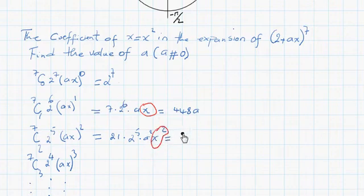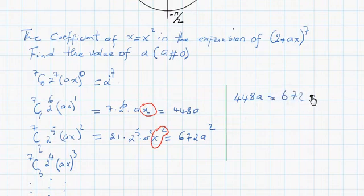The end result here would be 672a to the power of 2. Now, in the exercise, it is said that the coefficient of x equals the coefficient of x to the power of 2. Therefore, we're going to have 448a equals 672a to the power of 2.